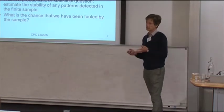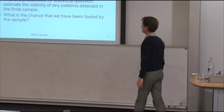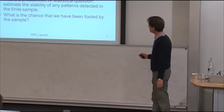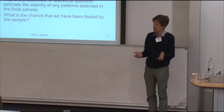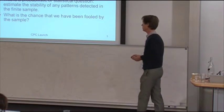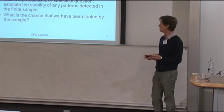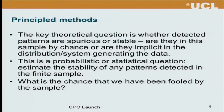The key theoretical question is whether the detected patterns are spurious or stable. Is it that they are there by chance just because of the particular sample you observed? Or are they really an indicator of the underlying process that has generated the data? This is really a probabilistic or statistical question. You need to be able to understand whether the pattern you've identified is actually stable and not just arising from the finite sample of data — whether you've been fooled by the sample into thinking this pattern is real when in fact it's just a chance event.